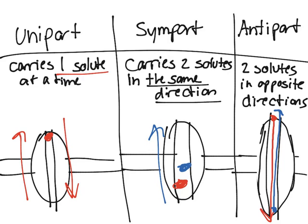There are two types of methods these proteins use: either facilitated diffusion or active transport. That's essentially a summary of carrier-mediated transport and the three types of membrane carriers. I hope you found this video helpful — if you did, please like it and share it with your friends.